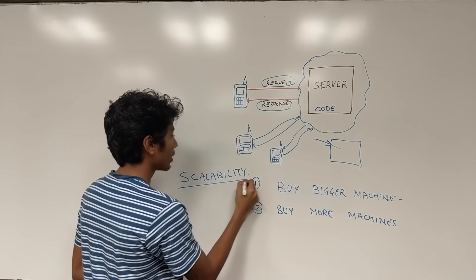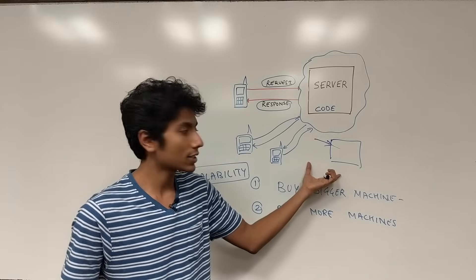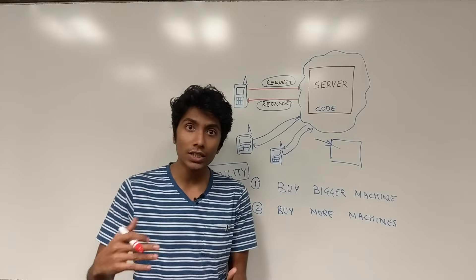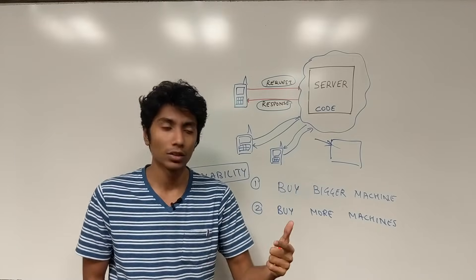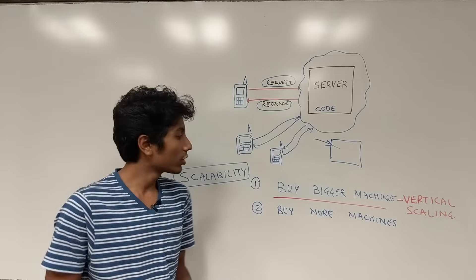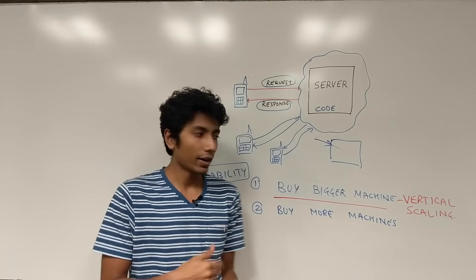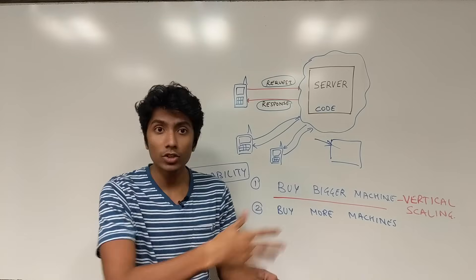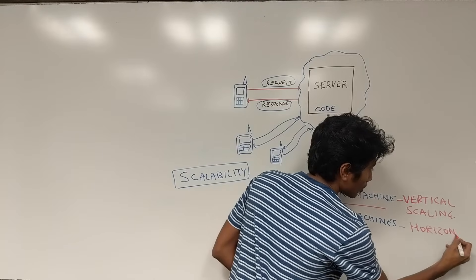This is a very important term that we need to understand well. Like we said, we can handle more requests by throwing more money at the problem. When you're buying bigger machines, it means that your computer is going to be larger and therefore it can process the requests faster. So that is called vertical scaling. And when you're buying more machines, it means that the requests can fall on any one of these machines and it will be processed. Because you have more of them, the requests can be randomly distributed amongst the machines that you have just bought, and that is called horizontal scaling.